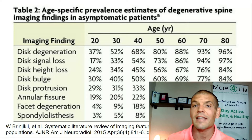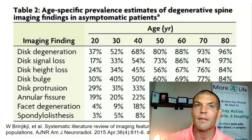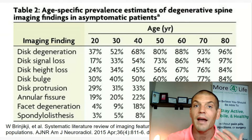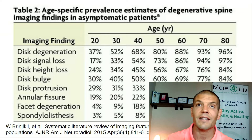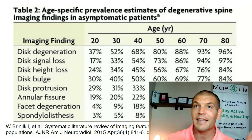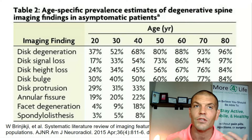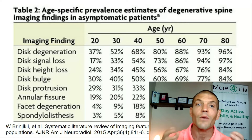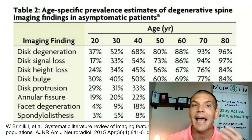Everything on this chart is in people who don't have any symptoms. Disc degeneration starts very early: about a third of people have it in their 20s, about 50% in their 30s, and much more as you go later in life. So not having disc degeneration on your MRI would actually be abnormal.